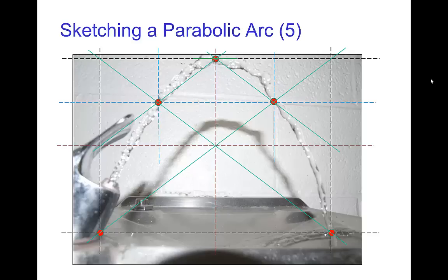And you can compare with examples of things flying through the air like this stream of water. You can even check this shadow is also a parabolic arc.